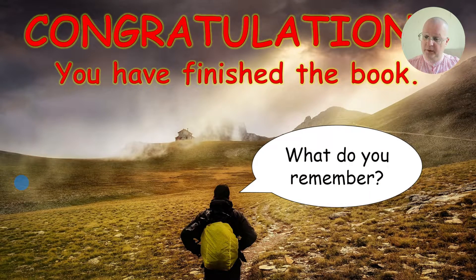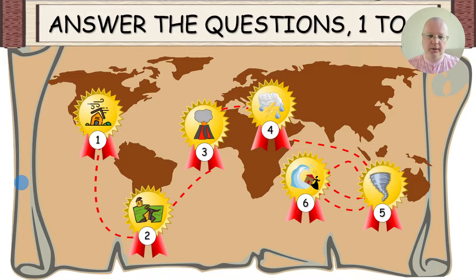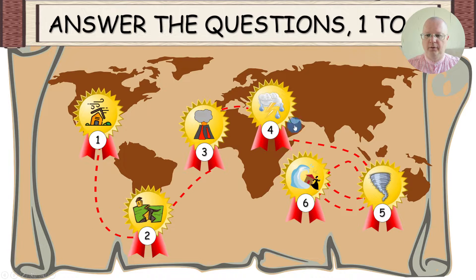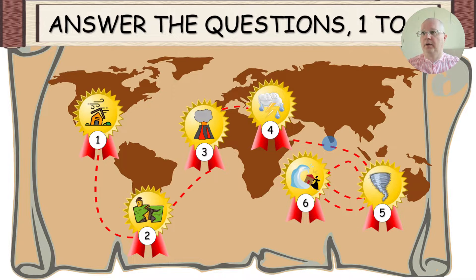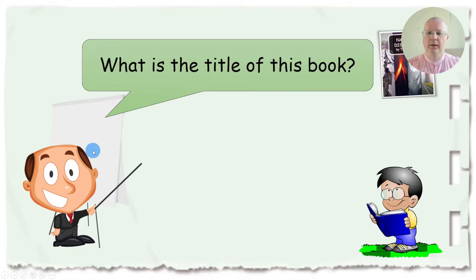Congratulations, you have finished the book — what do you remember? I've made a simple game to check comprehension. Students need to answer six questions, numbered one to six, and they travel on a map. These questions are designed to cover both lessons. Click on question number one and ask: what is the title of this book?